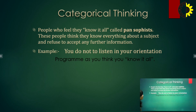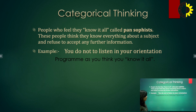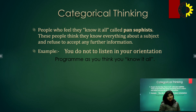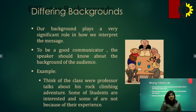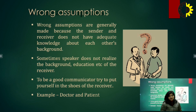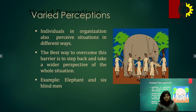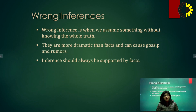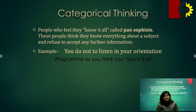Categorical thinking: people who feel they know it all are called pansofists. These people think they know everything about a subject and refuse to accept any further information. For example, not listening to an orientation program because you think you already know everything is an example of categorical thinking.